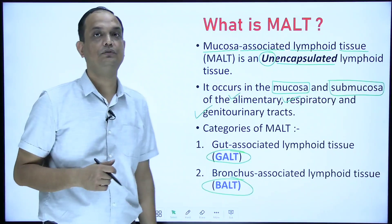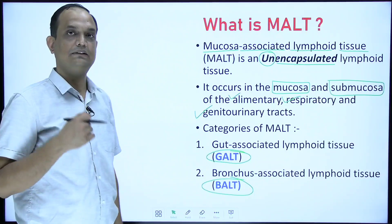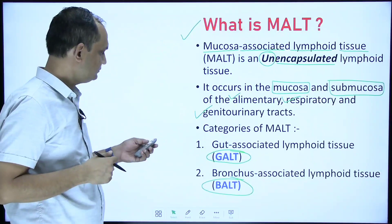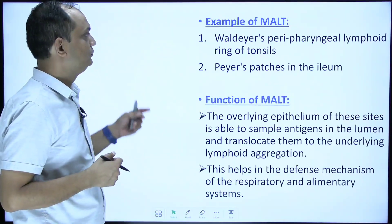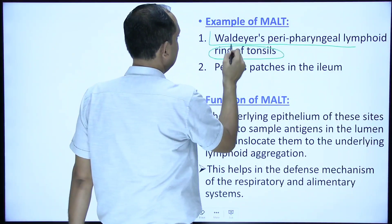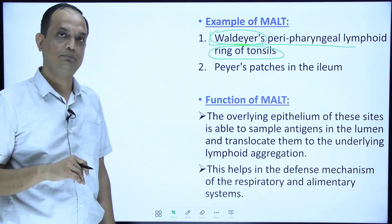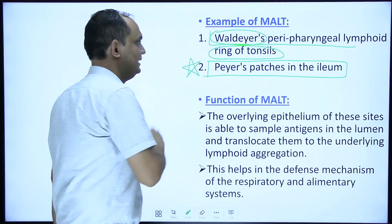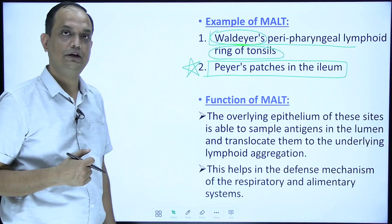There are two sets of collection seen in the sub-epithelial layer. Whenever you are writing a question on Waldeyer's ring, always include MALT into that short note, because Waldeyer's ring is an example of Mucosa Associated Lymphatic Tissue. The first example is Waldeyer's pre-pharyngeal lymphoid ring, and the second commonly asked question is Peyer's patches, which is a classical feature of ileum.